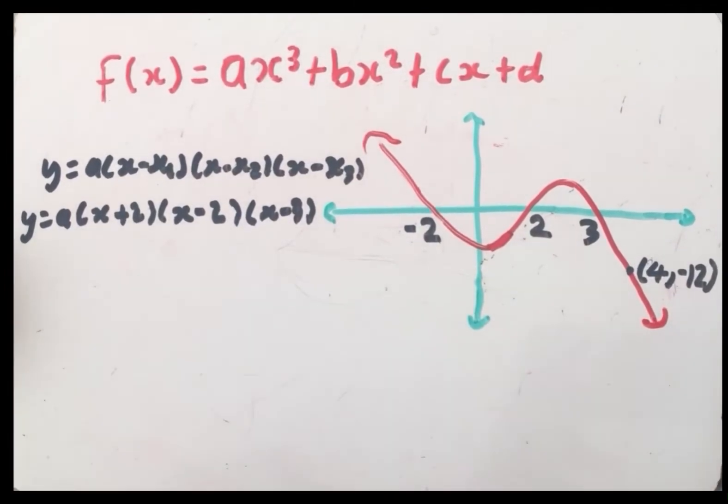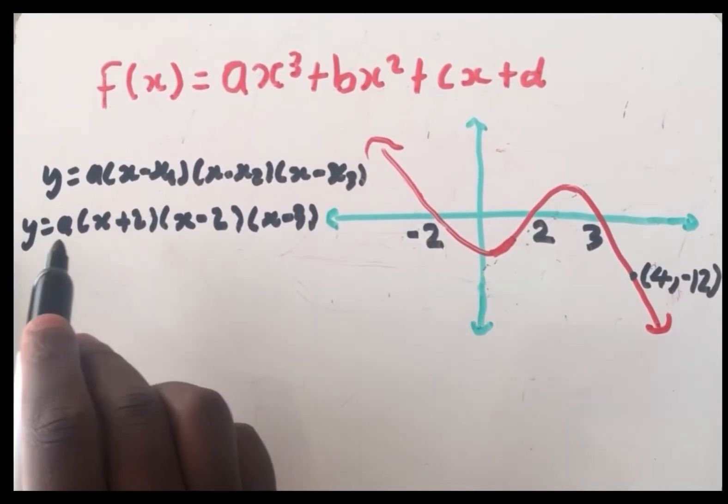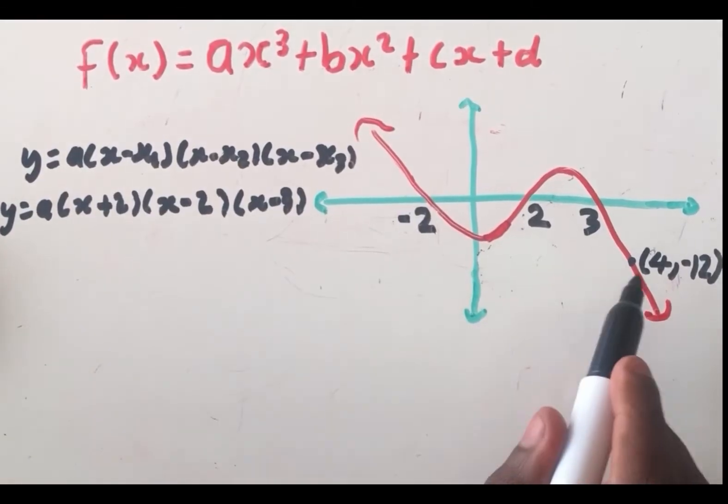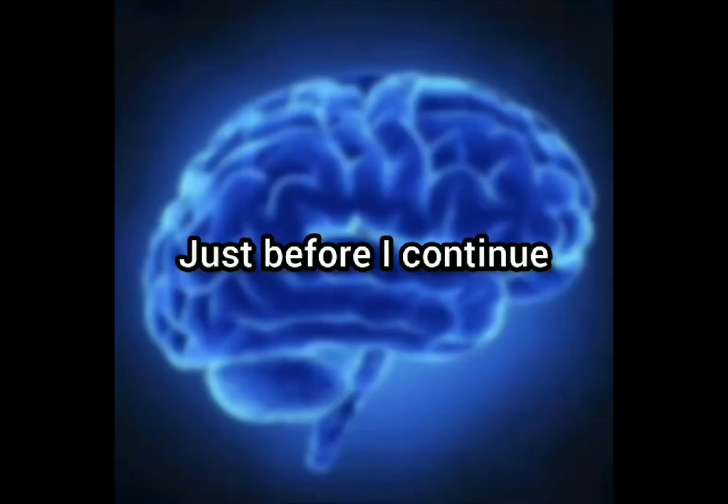After you're done substituting the x-intercepts, in place of y and x you have to substitute your extra point.